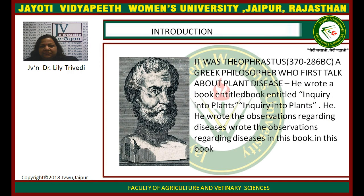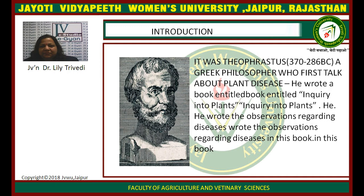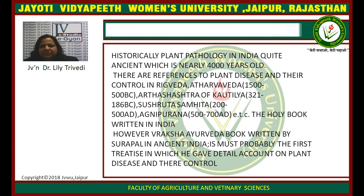Introduction. It was Theophrastus in 370 and 286 BC. He was a Greek philosopher who first talked about plant disease. He wrote a book entitled Inquiry into Plants and he wrote observations regarding diseases in this book. Historically, plant pathology in India is quite ancient and nearly 4000 years old.